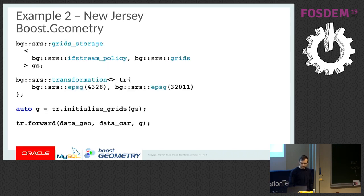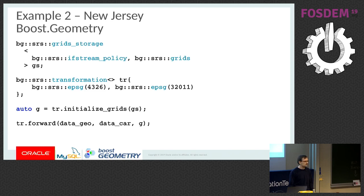Here's the single-thread example. I'm creating a grid storage, passing stream policy and grids. The first parameter tells how to access the file — it defines what kind of stream and how to open it. You can have a grid already loaded in a string, or whatever you like. The default one searches for a file in the program directory and uses ifstream. The second parameter, grids, tells the library to use single threading. Then we are creating the transformation and initializing grids, which are then passed to the forward methods.